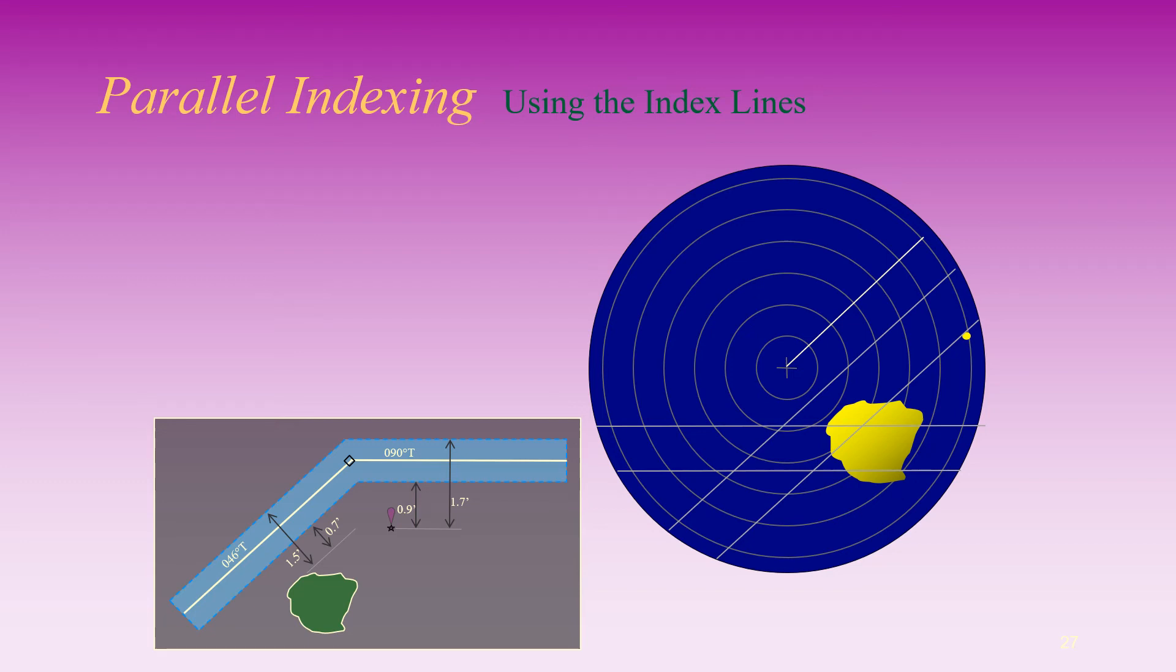The beacon is still some distance away from the 090 degrees true index lines, indicating that it will still be some time before the vessel reaches the turning point into the next leg.